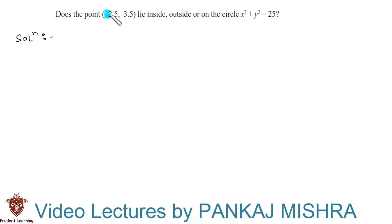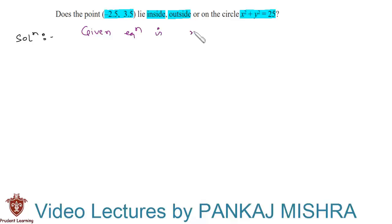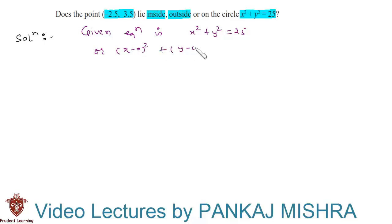Does the point lie inside, outside, or on the circle x² + y² = 25? Let us see the solution for this problem. The given equation of the circle is x² + y² = 25. We can also write this equation as (x - 0)² + (y - 0)²